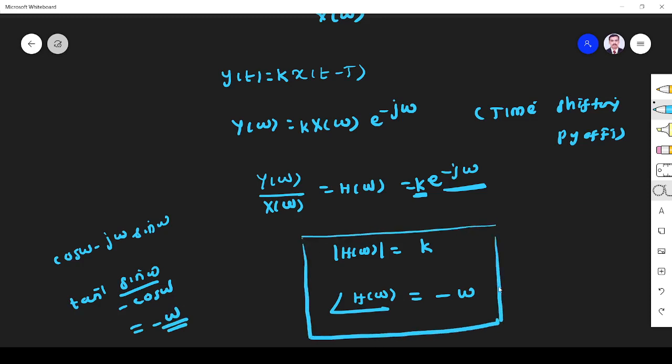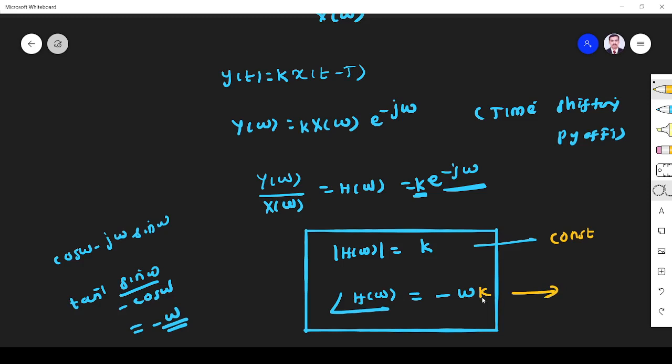The channel response magnitude should be constant and the phase must be linear. It is varying with respect to K—it is a function of ω. So it is linear phase. When ω varies, there is phase lag.